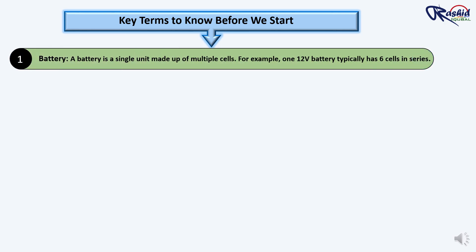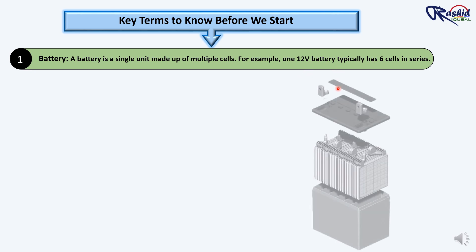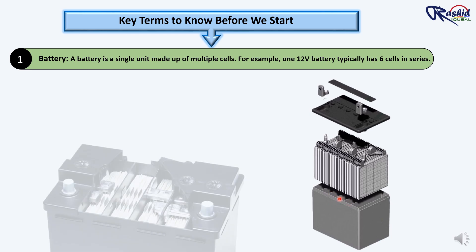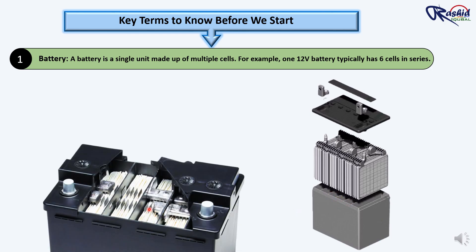Number 1: Battery. A battery is a single unit made up of multiple cells. For example, a typical 12V battery consists of 6 cells connected in series. Each cell contributes to the overall voltage of the battery. So in our 12V battery, each cell is responsible for 2V. As you can see here, there is a block inside the battery and each block consists of a 2V cell.